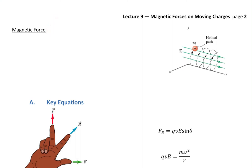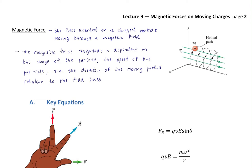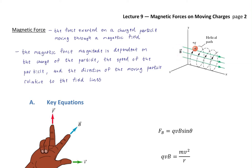One of the big things we'll be doing in computational questions is talking about magnetic force — the force exerted on a charged particle moving through a magnetic field. The magnetic force magnitude is dependent on the charge of the particle, the speed of the particle, and the direction of the moving particle relative to the field lines. Here is an example of a helical path taken by a charged particle inside a magnetic field, due to the forces exerted by the field on the charged particle.